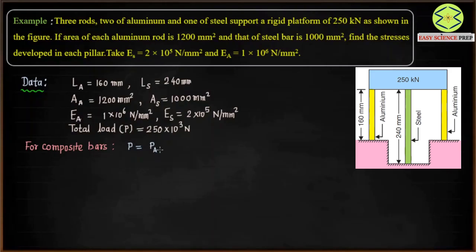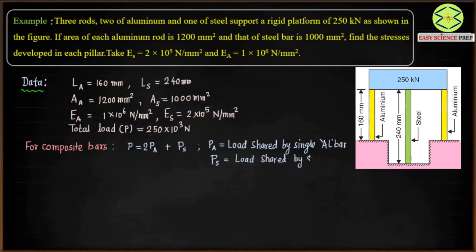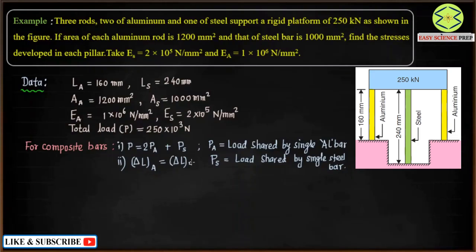The overall load is shared by aluminum as well as the steel bar. Since there are two aluminum bars, PA is the load shared by a single aluminum bar. So: 2·PA + PS = total load, where PS is the load shared by the single steel bar. This is Equation 1. Equation 2 states that the deformation in the aluminum bar equals the deformation in the steel bar. These two conditions are very important for solving composite bar problems.